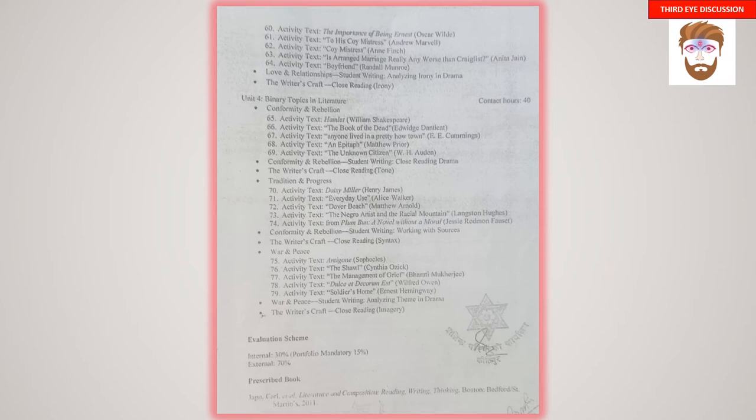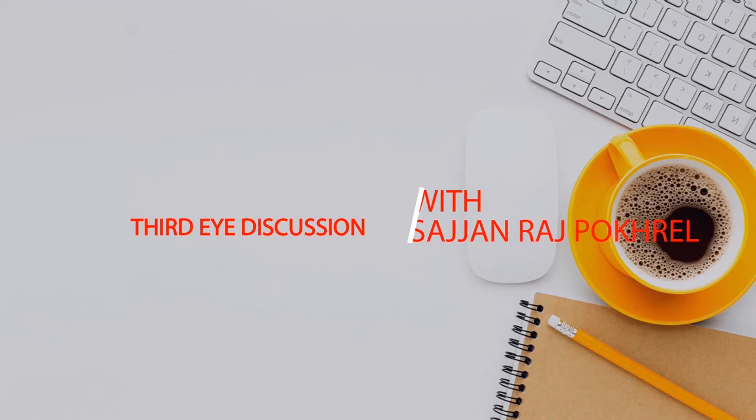The evaluation scheme for Paper 1 is divided into two parts: internal 30%, which includes portfolio — mandatory 15% — comprising paper works and projects given in the classroom by your respective professors and lecturers; and external 70%, which will be based entirely on your written examination.